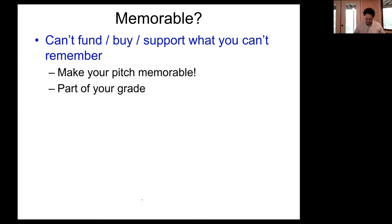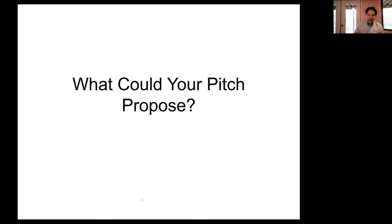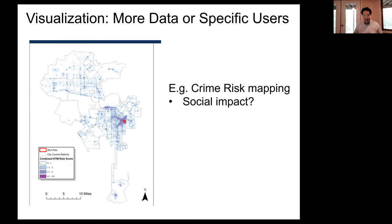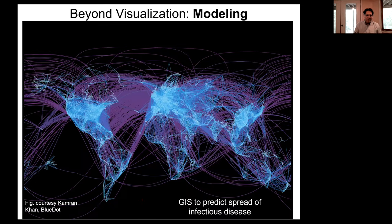What could you propose? One obvious direction is visualization—you could visualize more data with target-specific users. For example, a GIS that maps crime risk. In your pitch, you might want to address that this has utility for some users but could also stigmatize certain communities. You can also go beyond visualization to incorporate modeling. A company called Blue Dot in Toronto created a GIS that doesn't just visualize data—it models to predict what's going to happen. Developed well before COVID-19, it maps airline routes worldwide, and combined with data on emerging epidemics, it predicts where they'll spread and what public health measures should be put in place.